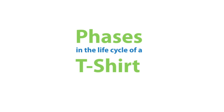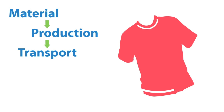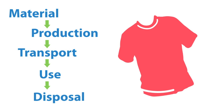To determine the environmental impact, we divide the life cycle in five phases. The material phase is where the fiber is harvested or manufactured. The production phase is where the textile is made. The transport phase is involved every step of the way. The use phase is when the consumer wears it. And the disposal phase is at the end of the road.